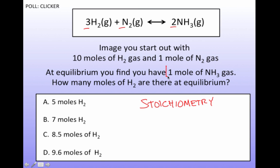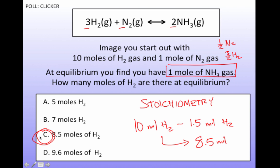So I know at equilibrium, I have 1 mole of ammonia, and I didn't start out with any. And so for every 1 mole of ammonia gas that's formed, I know that that's going to require a half a mole of N2 and 3 halves of a mole of H2. And so if I started out with 10 moles H2, and I've lost 1.5 moles of H2, then at equilibrium, I have to have 8.5 moles left. And so the correct answer is C.